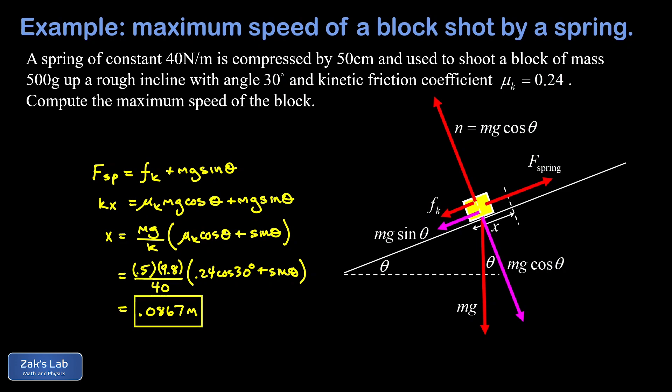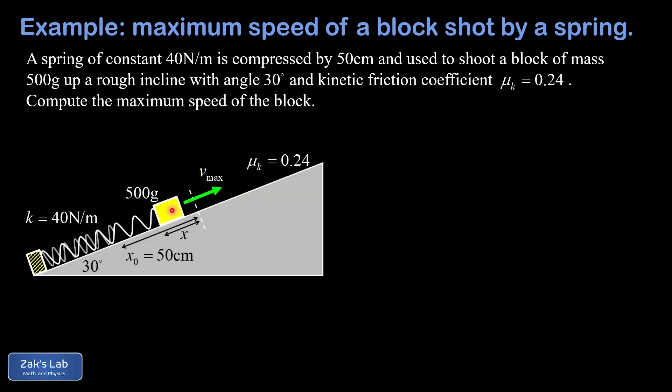Now we know where the mass is when it's moving at its largest speed, but we still have to compute that speed — that's where we get into a conservation of energy problem. Going back to the original diagram with a couple modifications: the spring has expanded a little bit to position x where the speed is a maximum, so that label x is added to the diagram. The original compression distance is 50 centimeters, but we'll work with that symbolically as x₀ in all of our calculations.